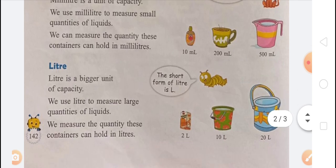The next unit is liter. Liter is a bigger unit of capacity; we use liter to measure large quantities of liquid. Any container that can hold two liters or more is measured in liters — such as a bottle of oil holding 2 liters, a bucket holding 10 liters, or a big container holding 20, 50, or 100 liters.